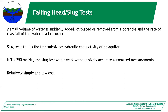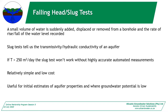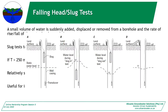Slug tests are relatively simple and low cost to do. They're useful for initial estimates of aquifer properties and also for areas where you have low potential. If you're in an area where the blow yield of the hole was just seepage but your client still wants to develop it, a slug test will give you a good indication of what kind of pump you can recommend, despite your best efforts to convince them not to pump — because doing a pump test on these low-yielding holes can burn your pump out.